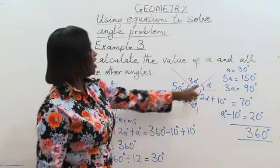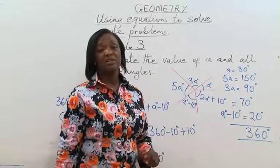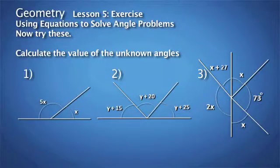Having done all those examples, now try this out. Question 1. We want to calculate the value of the unknown angles. For number 1, we have two angles, 5x degrees and x degrees. Number 2 is right there. And number 3, as we can see, is we have angles at a point. I hope you know what to do.